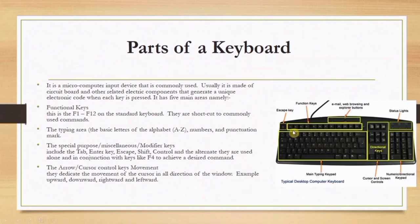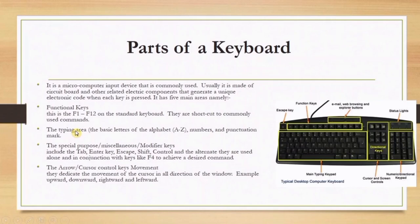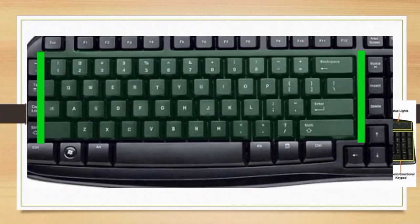The first area is the function keys, starting from F1 to F12 — you can see them on your keyboard. They are used as shortcuts to commonly used commands. For example, if I want to shut down my computer, I press Alt+F4 on my keyboard.